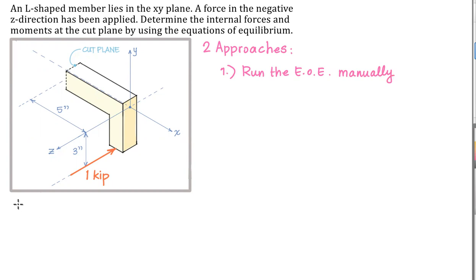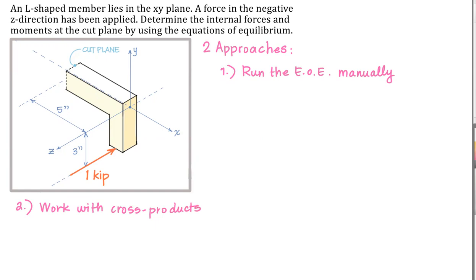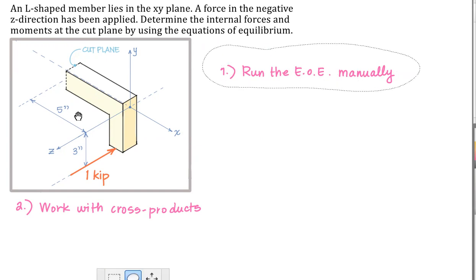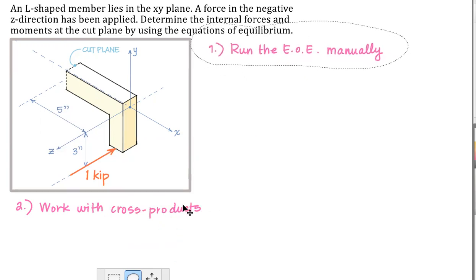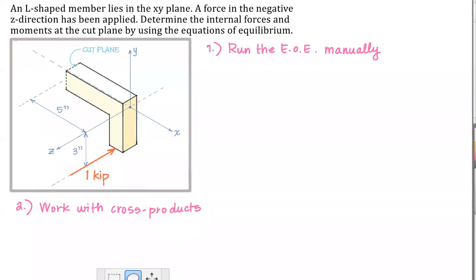The other approach is to work with cross products. I'll do it the way that I feel is more intuitive first — approach number one — and then we will do the same thing with the cross product. The more complicated the structure is, the more likely I am to use a cross product. The simpler it is, the more likely I am to do this by hand.